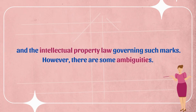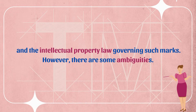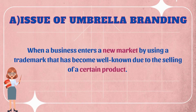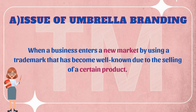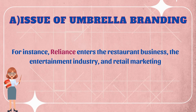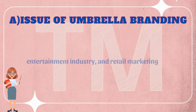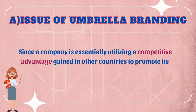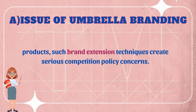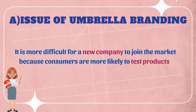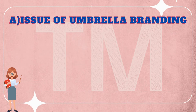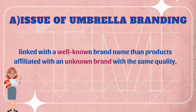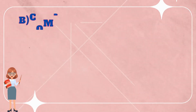There are some ambiguities, however. The issue of umbrella branding arises when a business enters a new market using a trademark well known from another product — for instance, Reliance entering the restaurant business, entertainment industry, and retail marketing. Since the company is essentially utilizing a competitive advantage gained in other sectors, such brand extension techniques create serious competition policy concerns. It is more difficult for a new company to join the market because consumers are more likely to test products linked with a well-known brand than an unknown brand of the same quality.